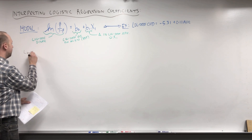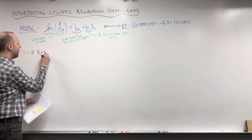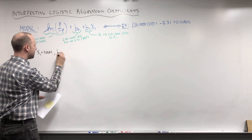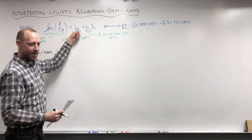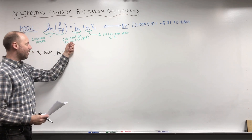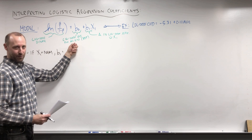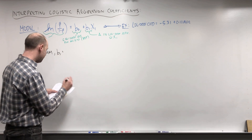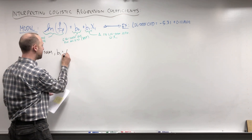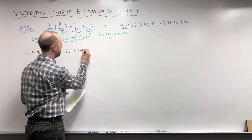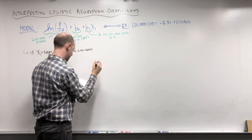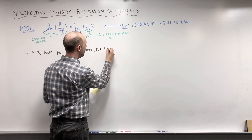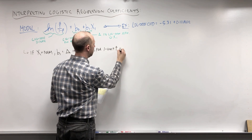Let me write some of these down generically. The intercept always has the same interpretation: it's the log odds of the disease for the reference group, for all x equals 0 or all the reference categories. When x is numeric, B1 is the change in the log odds for a one-unit increase in x.